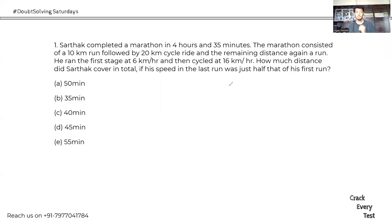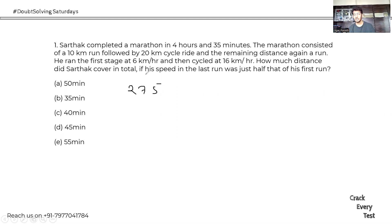Sarthak completed a marathon in 4 hours and 35 minutes — that is 275 minutes total. A marathon consists of a 10 km run, followed by a 20 km cycle, and the remaining distance is again a run. He ran the first stage at 6 km/h, so he took 100 minutes for that 10 km.